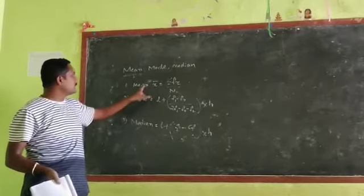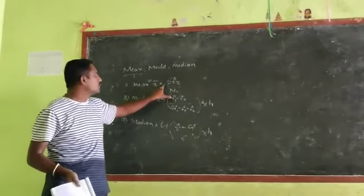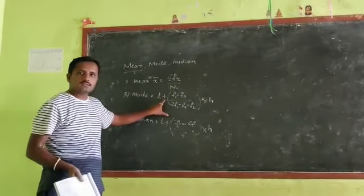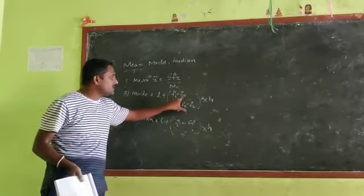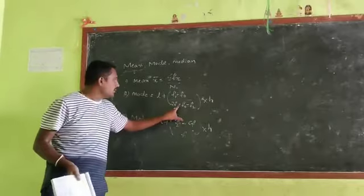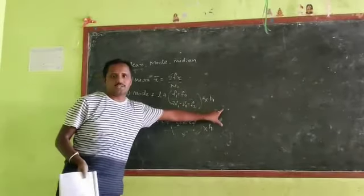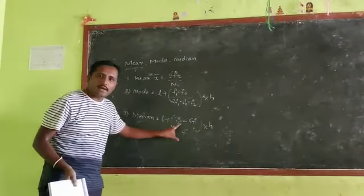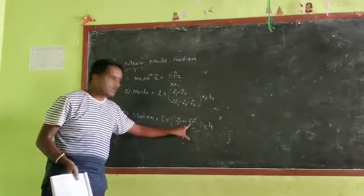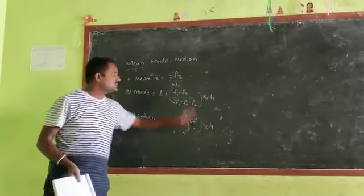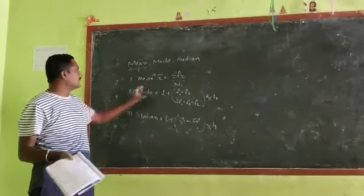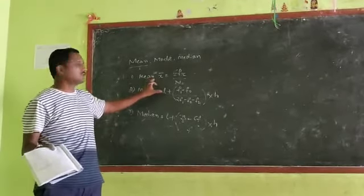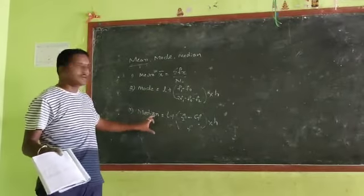Let me recap the formulas. Mean = Σfx/n. Mode = L + (f1 - f0)/(2f1 - f0 - f2) × h. Median = L + (n/2 - cf)/f × h, where cf is the cumulative frequency. With these three formulas, we can calculate mean, mode, and median one by one.